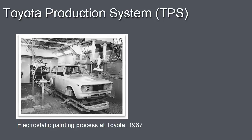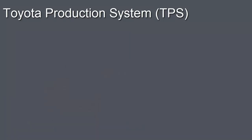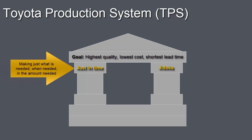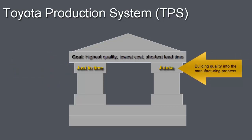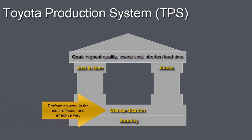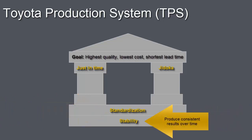Around the same time, the Toyota Production System was developed in Japan. The main goal of the Toyota Production System, or TPS, is to provide the customer with the highest quality vehicle, at the lowest cost, with the shortest lead time. Two key concepts in TPS are just-in-time and Jidoka. Just-in-time refers to the concept of making and delivering just what is needed, just when it is needed, and just in the amount needed. Jidoka is the idea of building quality into the manufacturing process, so only products that meet specifications are passed to the next process on the production line. Also included in the TPS are standardization and stability. Standardization is performing work in the safest, easiest, and most efficient and effective way. Stability means you can produce consistent results over time.